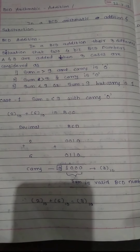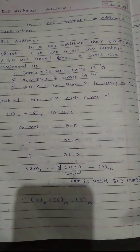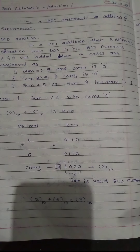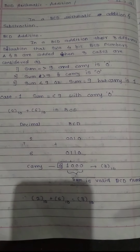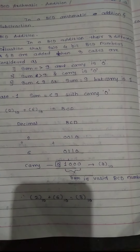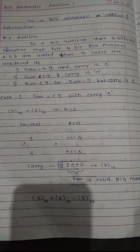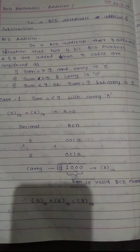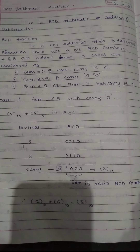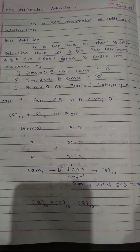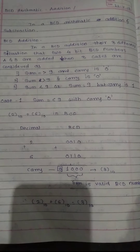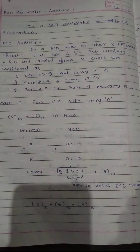Hello students, today we are going to learn BCD arithmetic. In BCD arithmetic there is addition and subtraction, but in the syllabus there is only BCD addition — this is for SY Computer. In BCD, numbers 0 to 9 are represented the same as binary, but after that, numbers 10, 11, 12, 13, 14, 15 are represented in the form of packed BCD.